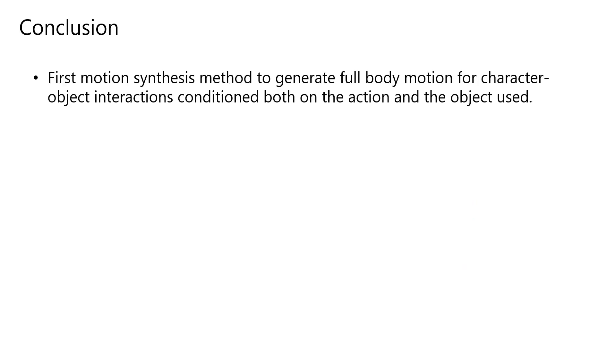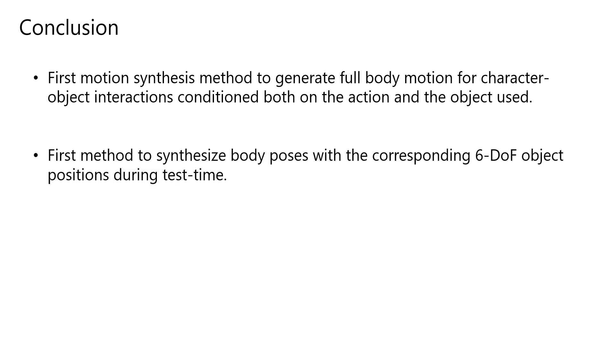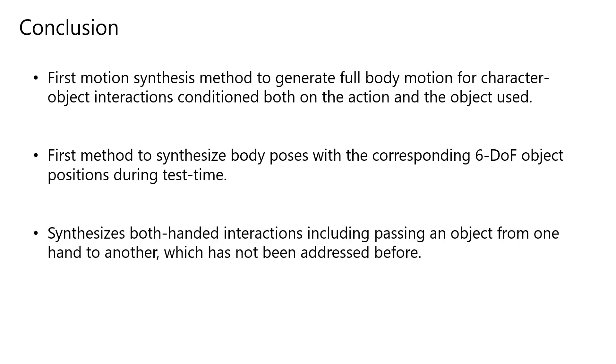In conclusion, we present the first motion synthesis technique to generate full body motions for character-object interactions conditioned both on the action and the object used. This is the first method to synthesize body poses along with the corresponding 6-DOF object positions during test time. We place special focus on synthesizing interactions involving both hands. This also includes sequences where the object is passed from one hand to the other, a setting that has not been addressed before. We also account for variability of the synthesized motions. Thank you for your attention.